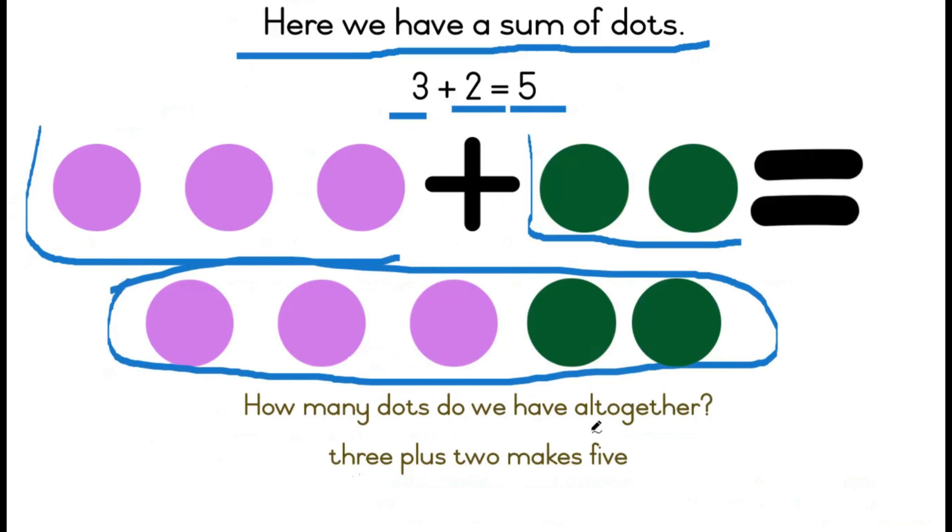How many dots do we have altogether? We started off with three, added in two, and got five. What does this mean? This means that three plus two makes five.